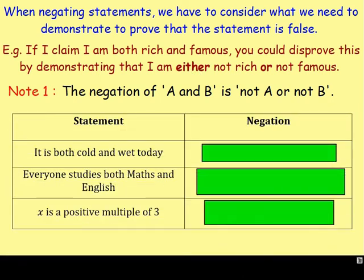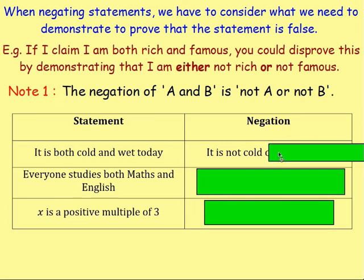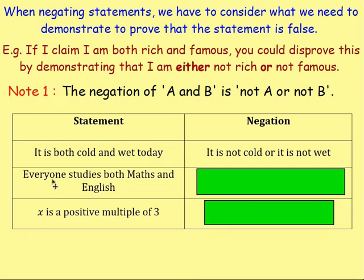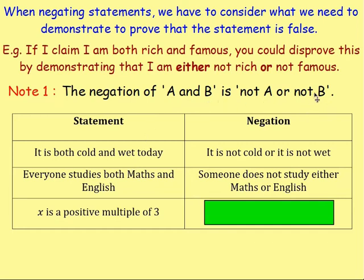Consider these three statements. The first says 'it is both cold and wet today.' To disprove that, you could say it is not cold, or it is not wet — just one would disprove the whole statement. If I said 'everybody studies both maths and English,' the opposite of everybody is that you can disprove it by finding just one person who doesn't. So the negation of 'everybody' would be 'someone.' And to disprove 'maths and English,' you'd just need someone who doesn't study maths or doesn't study English.